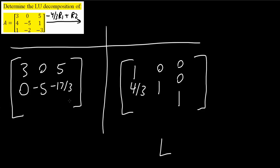Next, I will modify the last row. I'll write what we have so far: 1, negative 2, negative 3. But I need to modify this to get a 0 for the first and second positions. So I can say that negative 1/3 R1 plus R3, and that would give us a 0 for this position.